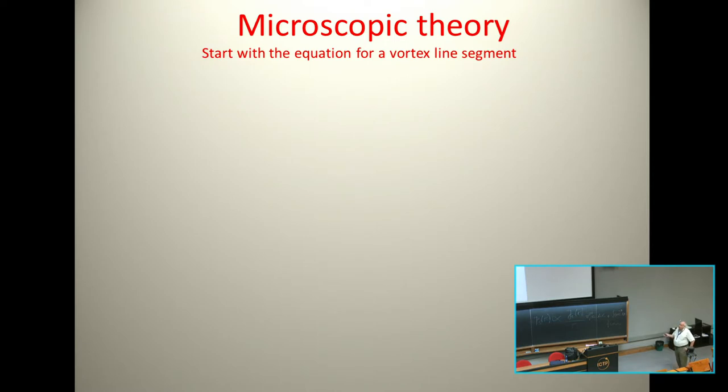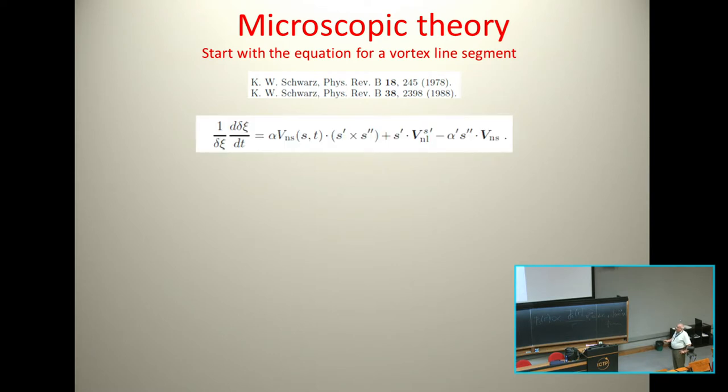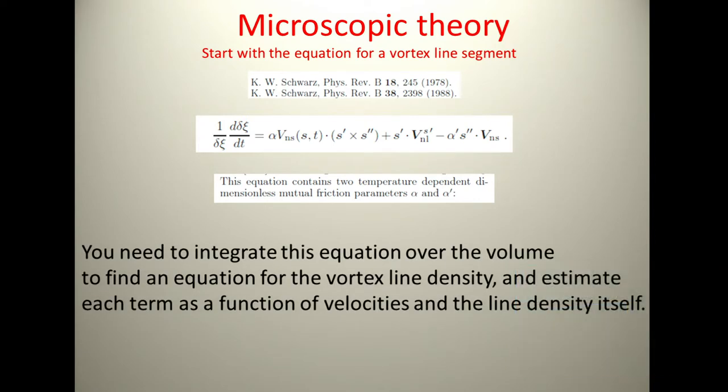This comes really from a microscopic theory. The microscopic theory, in order to get to what you see, you have to start with the equation for the vortex line segment, following the work of Schwartz from the 70s and 80s. You write an equation of motion for xi. Xi is an element of a vortex line. This equation contains two unknown parameters, alpha and alpha prime, known as the mutual friction parameters.